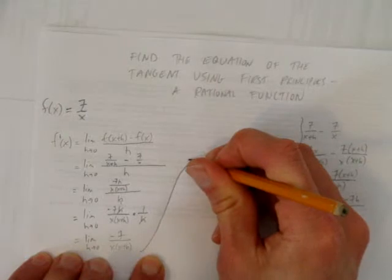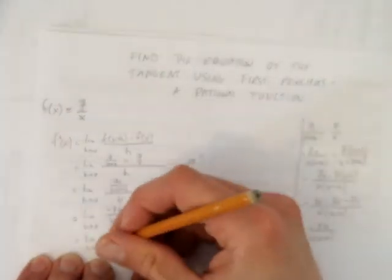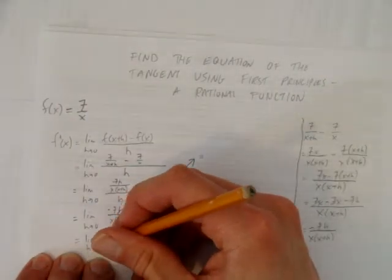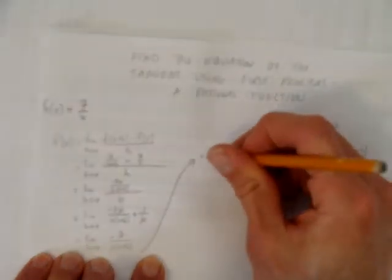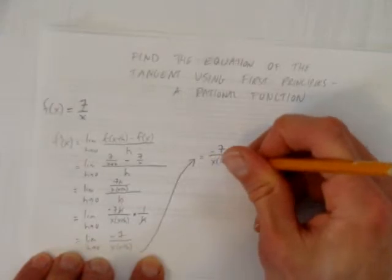Good so far? Because now we're going to get rid of this limit as h approaches 0. That is, we're going to sub in h equals 0. And we get negative 7 over x, x plus 0, and that's just x.